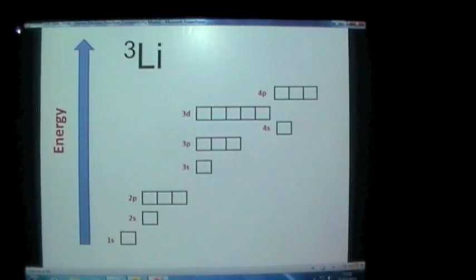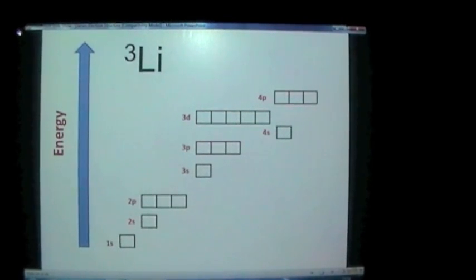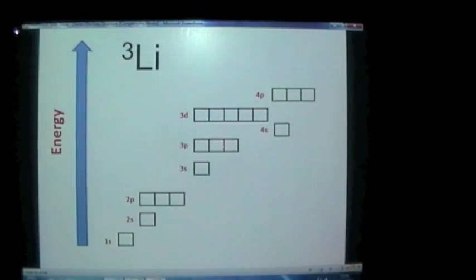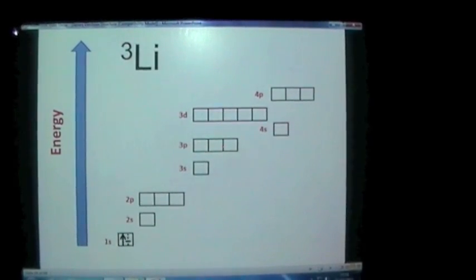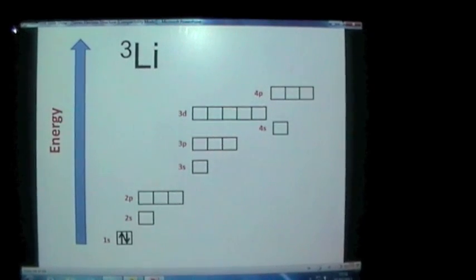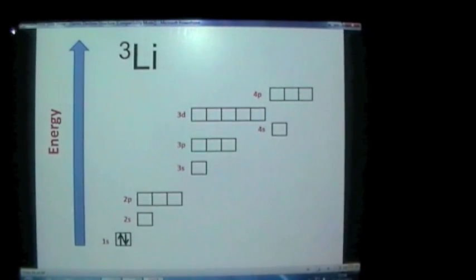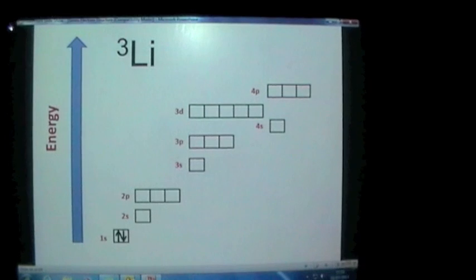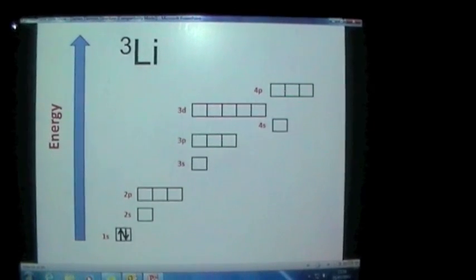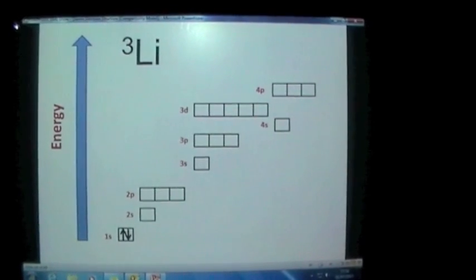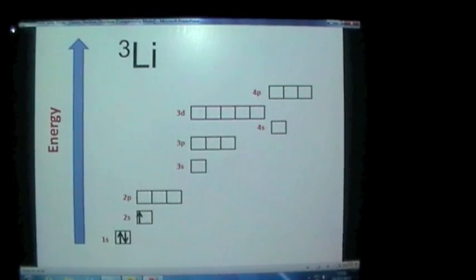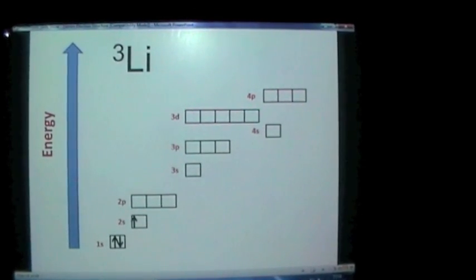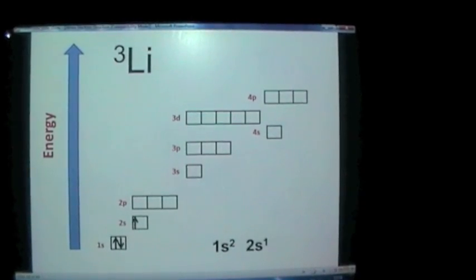We'll move on to lithium now with three electrons. The first two are going to go into the 1s subshell. There they are with their opposite spins. We've got another electron now. Where will that go? Well it's going to go in the next available subshell, so it's going to go into 2s. We're just putting an up arrow in there and that's lithium done. How would we write that? 1s2, 2s1.